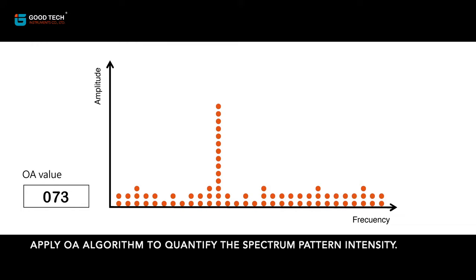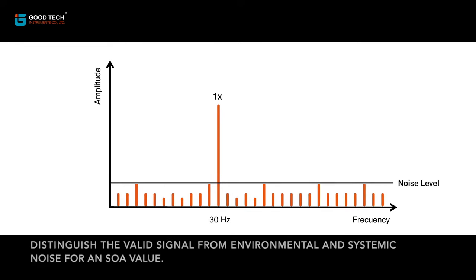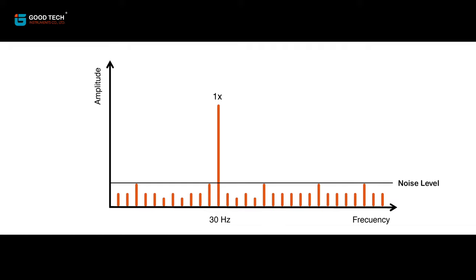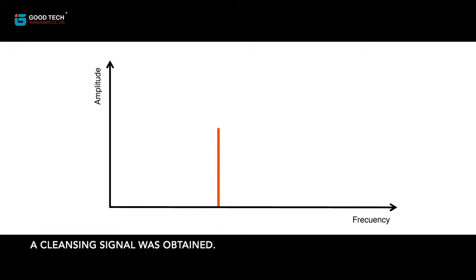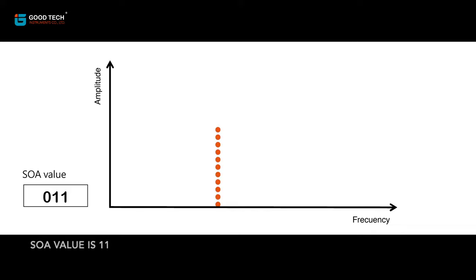OA value is 73. Symptom diagnosis function automatically sets the noise level to distinguish the valid signal from environmental and systemic noise. For an SOA value, a cleansing signal was obtained. Apply SOA algorithm to quantify the spectrum pattern intensity. SOA value is 11.